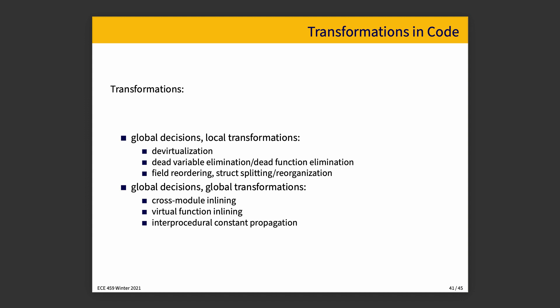Once we've done that, there are a few things we can actually do as transformations, and they fall into two categories. Both rely on global decisions, but the question is where the transformations happen. Global decisions with local transformations: we've looked over the whole program, and now we can make a small change in one part of the program. That includes devirtualization, dead variable elimination, dead function elimination, and field reordering — changing how a structure is organized.